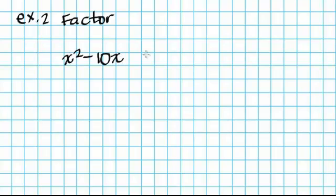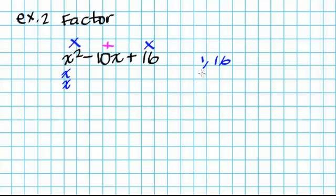Example number 2: we're going to factor the trinomial x squared minus 10x plus 16. Once again, the first term and the last term multiply up to those results, and the center terms have to add up. Factors of x squared are x times x, and factors of 16 are 1 and 16, 2 and 8, and 4 and 4. I need the center terms to add up to 10.